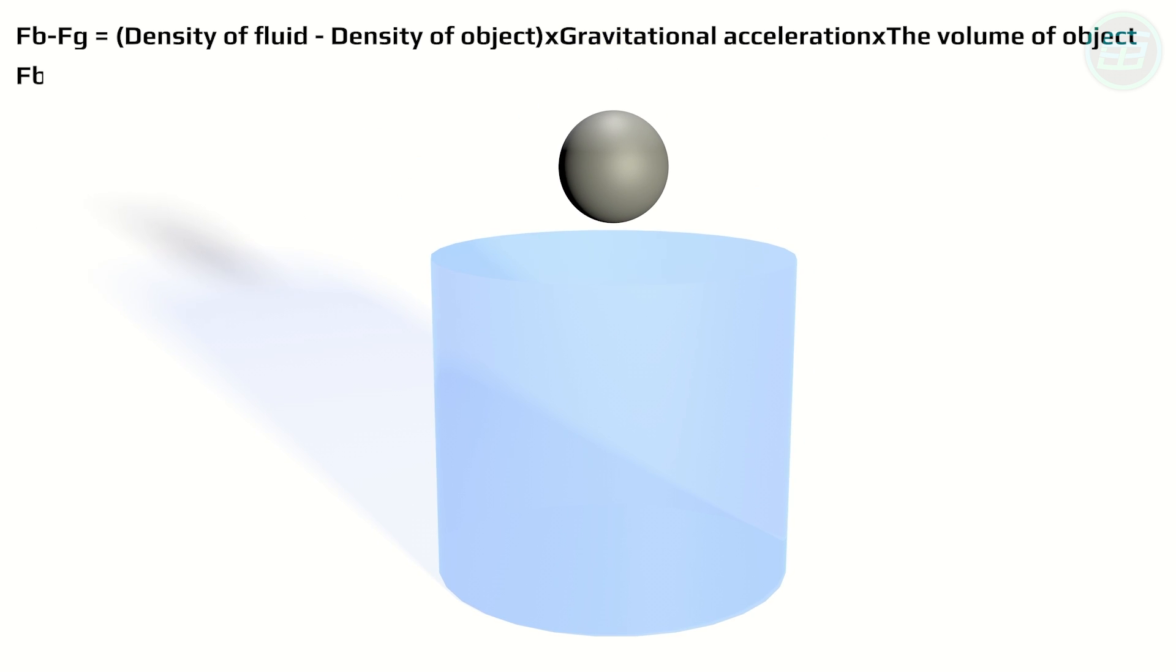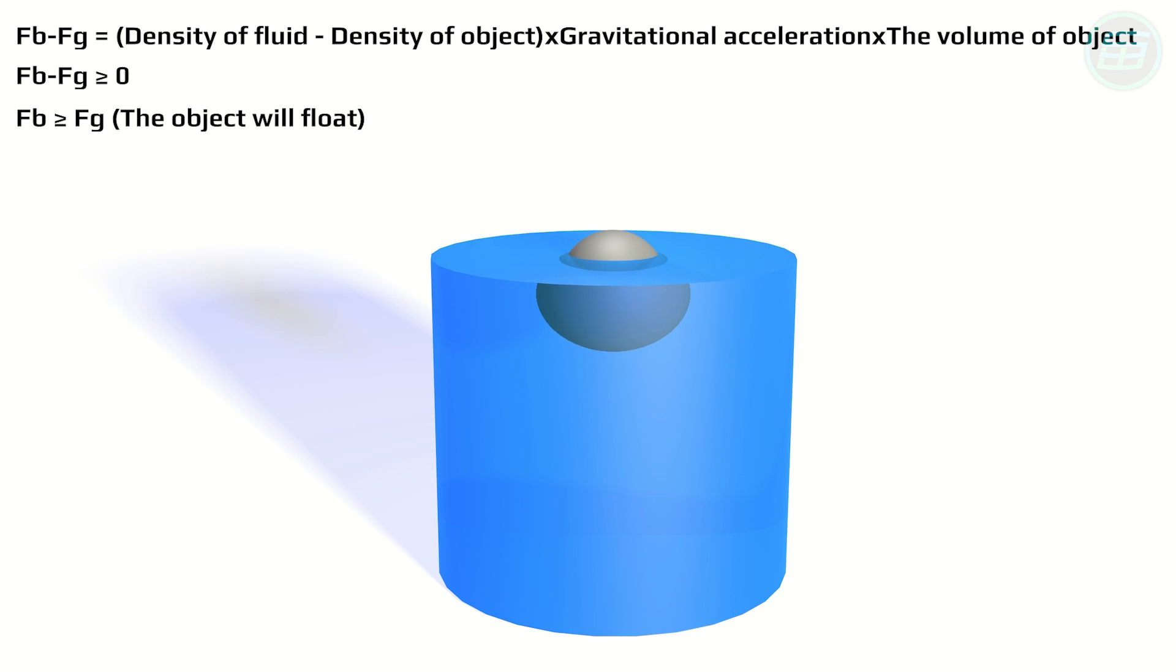If the buoyant force minus the gravitational force is zero, the object will float. It may float with part projecting above the fluid surface or fully submerged at the surface. If the buoyant force minus gravity is less than zero, that means the upward force acting on the object is smaller than the gravitational force and so the object will sink.